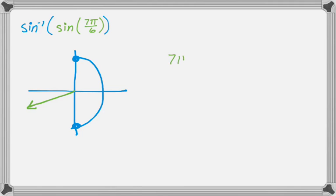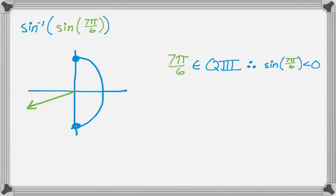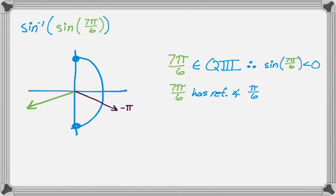Since 7π over 6 is in quadrant 3, the sine of 7π over 6 is negative. So I want an angle in quadrant 4 as my final answer, because sine is negative there. The reference angle of 7π over 6 is π over 6. I want the angle in quadrant 4 with a reference angle of π over 6, and since arc sine requires an answer between negative π/2 and π/2, the only option is negative π over 6. So the answer is negative π over 6.